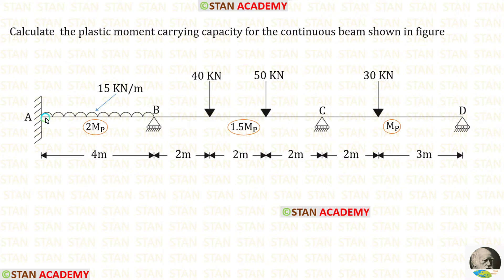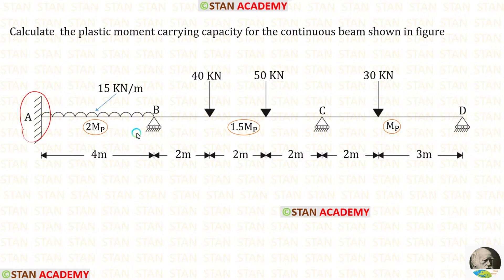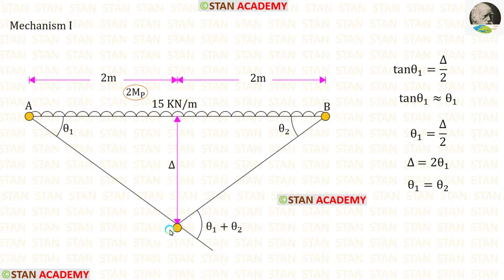First let us take span AB. In span AB we have a uniformly distributed load of 15 kN per meter acting for the full span. In this span, at fixed end A there will be a plastic hinge, at joint B there will be a plastic hinge, and the third plastic hinge will occur under the UDL in the center. Now let us take this span and form the first mechanism. The third hinge will occur in the center of the span.